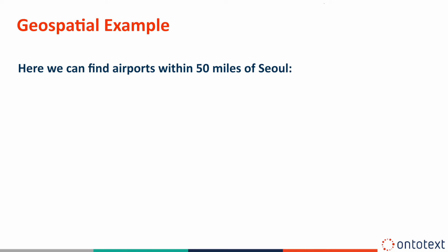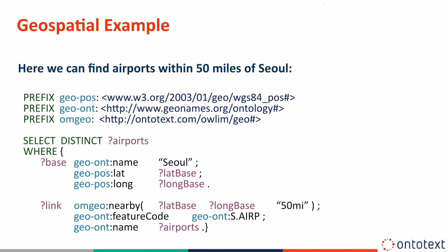In the second part of the WHERE clause, we are querying for all entities that are a certain distance away — for example, 50 miles — from our center, SOL. We need those entities to be an airport, so we specify that they need to have the feature S.A.I.R.P. from the GeoNames ontology.